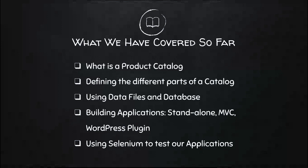Up till now, we have covered what a product catalog is, how to define it, how to pull out the different elements of it. We've looked at using data files and databases. We've also built product catalog applications as a standalone application to connect to our database, built a model-view-controller web application, a WordPress admin application, and used Selenium to test our web applications with the Selenium IDE and Java unit test functionality.